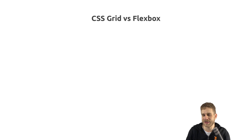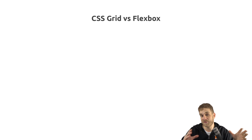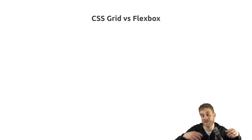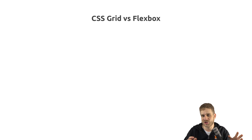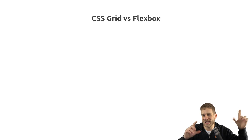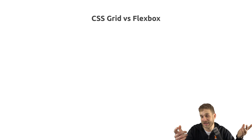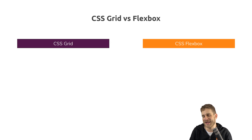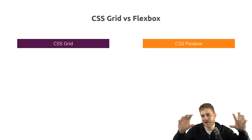CSS Grid vs Flexbox. In this video I'll also show you both in a practical example without diving too deep into it, but let's first get the theory out of the way. The CSS Grid is a relatively new feature of the CSS specification that allows you to position elements in — you guessed it — a grid. So, to lay out items as a grid on your page.